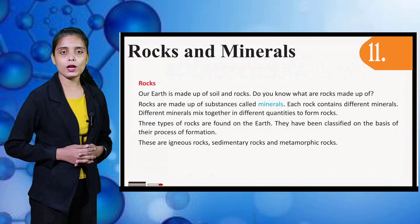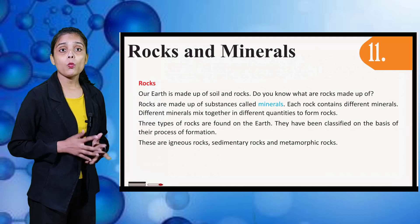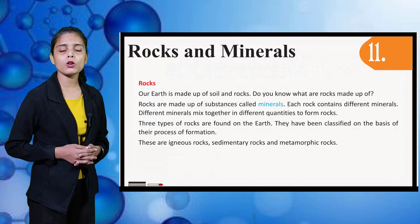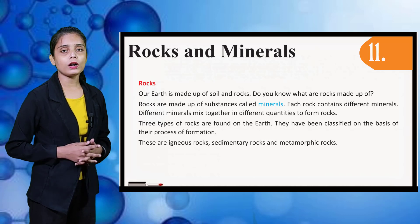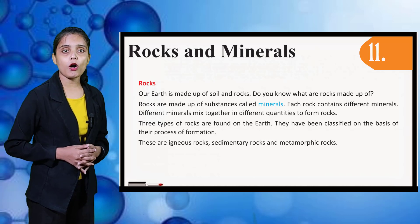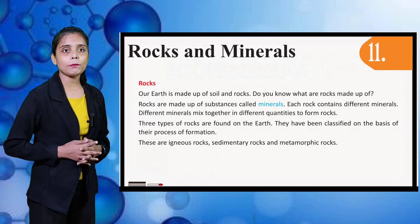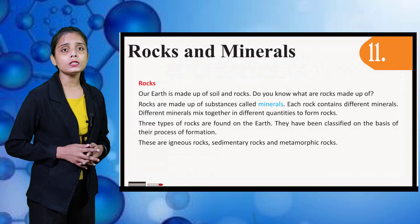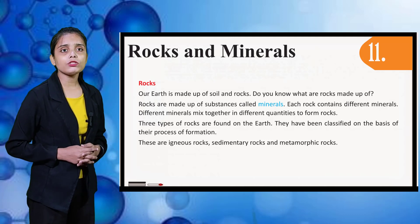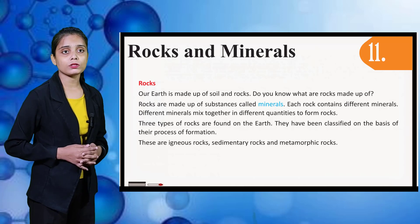Earth is made up of soil and rocks. Do you know what rocks are made up of? Rocks are made up of substances called minerals. Each rock contains different minerals. Different minerals mix together in different quantities to form rocks. Three types of rocks are found on the earth, classified on the basis of their process of formation. These are Igneous Rocks, Sedimentary Rocks, and Metamorphic Rocks.